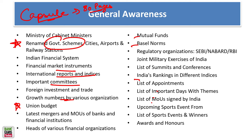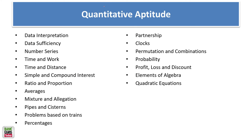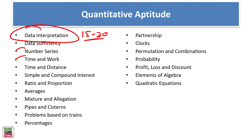In the quantitative aptitude section, data interpretation is the key to success. You'll find 15-20 questions directly from data interpretation — 40-50% of the paper would be from data interpretation. Other topics include number series, time and work, time speed and distance, simple and compound interest, ratios and proportions, averages, problems based on ages, percentages, pipes and cisterns, partnership, clocks, permutation and combinations, probability, profit and loss, and algebra — you'll get 1-2 questions from each of these topics.